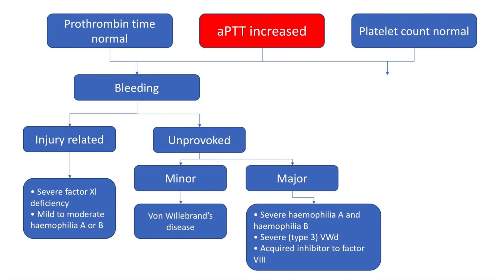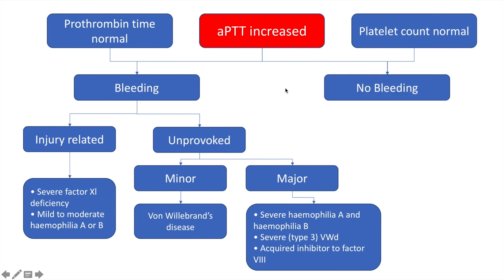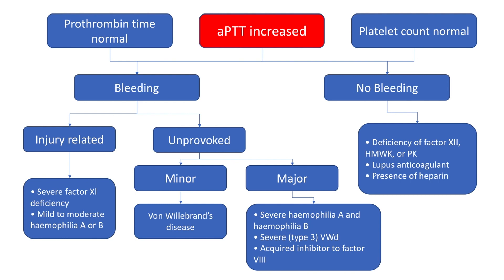In a patient with an unprovoked major bleed and an increased APTT, we must always think of hemophilia. A patient having a minor unprovoked bleed with a raised APTT should raise suspicion for von Willebrand's disease. If the patient is not bleeding, it could be deficiency of factor 12, high molecular weight kininogen, lupus anticoagulant, or the patient may be on heparin therapy.